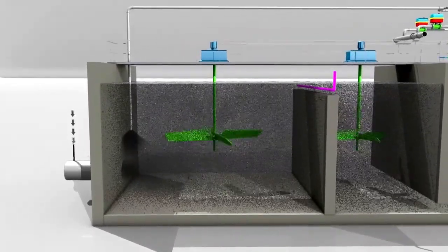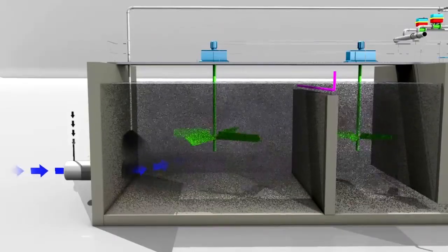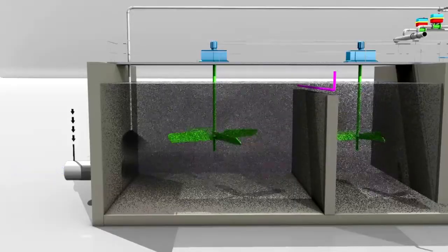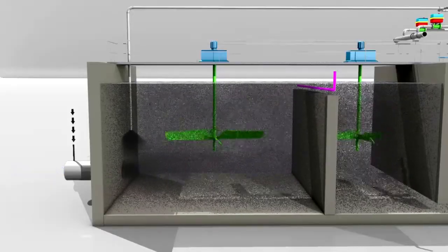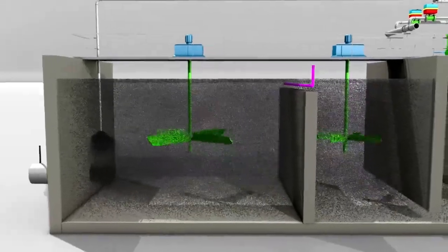After addition of powdered activated carbon, raw water enters the contact tank under vigorous mixing conditions to facilitate the adsorption reaction of the refractory compounds. Hydraulic retention time in this tank is typically 5 to 10 minutes.